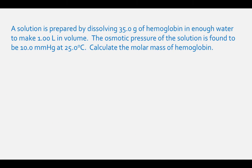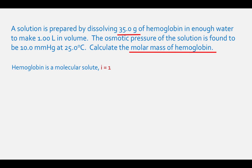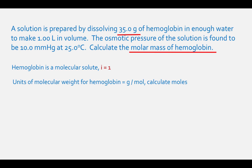A solution is prepared by dissolving 35.0 grams of hemoglobin in enough water to make 1.00 liter in volume. The osmotic pressure of the solution is found to be 10.0 millimeters of mercury at 25.0 degrees Celsius. Calculate the molar mass of hemoglobin. Since hemoglobin is a molecular solid, the Van't Hoff factor is 1. The equation is: osmotic pressure equals the Van't Hoff factor times the molarity times the gas constant times temperature.